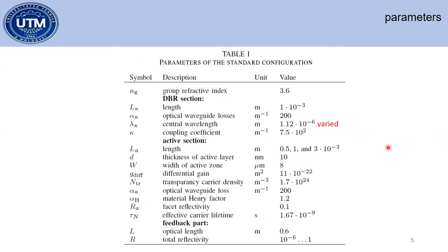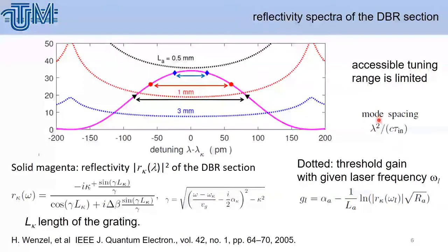Here I included the parameters which will appear in the paper. You see the reflectivity spectrum of the DBR section, which is this line. For different lengths, we have some accessible tuning range which is limited by this range.